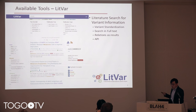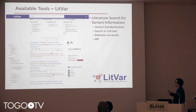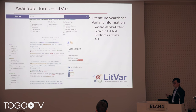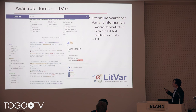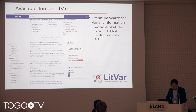The most recent tool that we developed is called LITVAR. LITVAR is a literature search engine for variant information. We support variant standardization based on TNVAR 2.0, and we can search full text — only open access full text. We can find relations as results and also support an API.